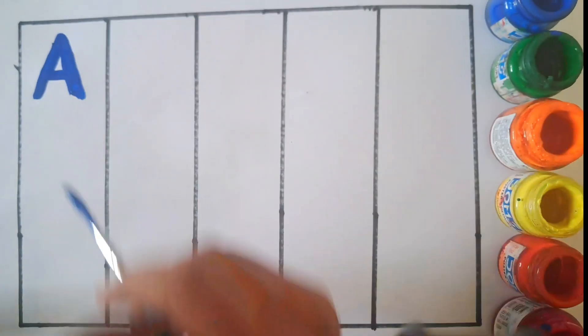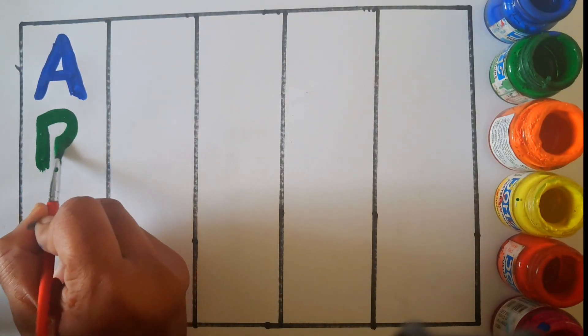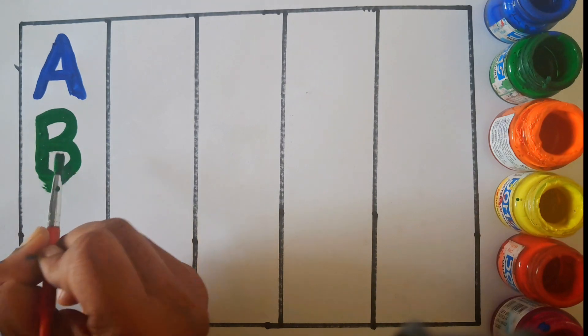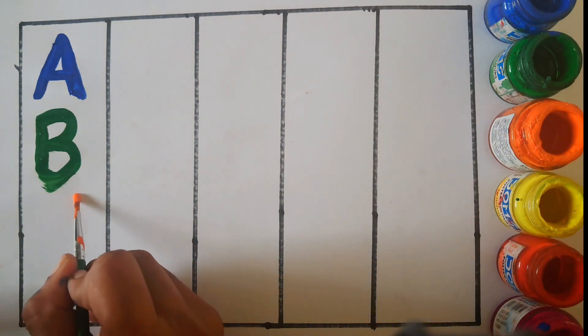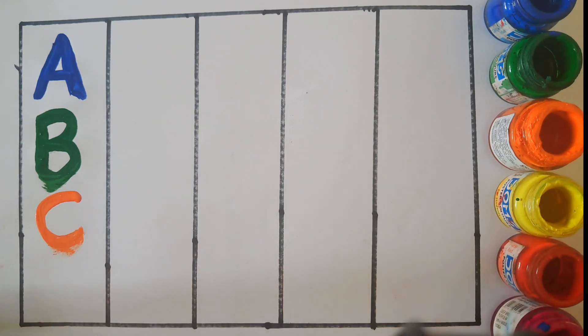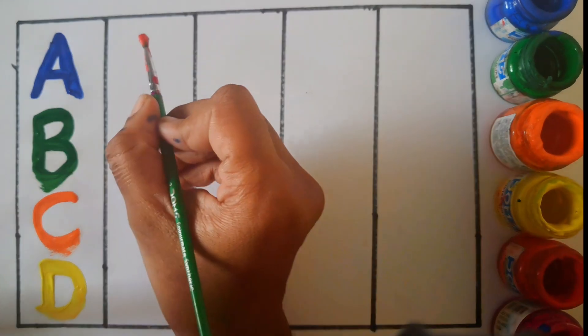A, A for Apple. B, B for Ball. C, C for Cat. D, D for Ball. Next time won't you sing with me.